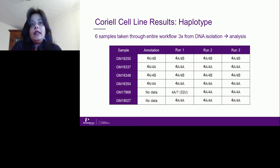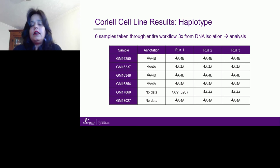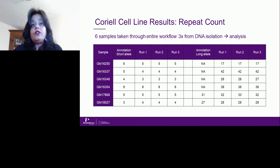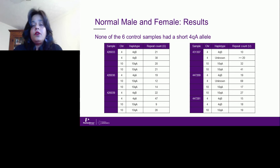These are the results of the Coriell cell lines. Six samples were taken through the entire FSHD workflow three times from DNA isolation to analysis. You can see the published annotation and what was found in runs one, two, and three. The longer allele is not the focus since we are looking at repeat contractions. The short allele shows reproducibility of plus or minus one repeat contraction, and the long allele results were concordant across all three runs.